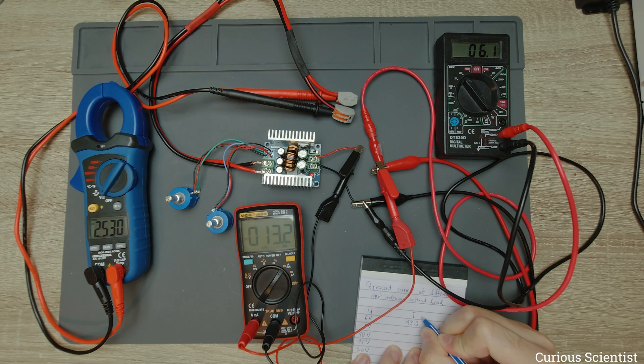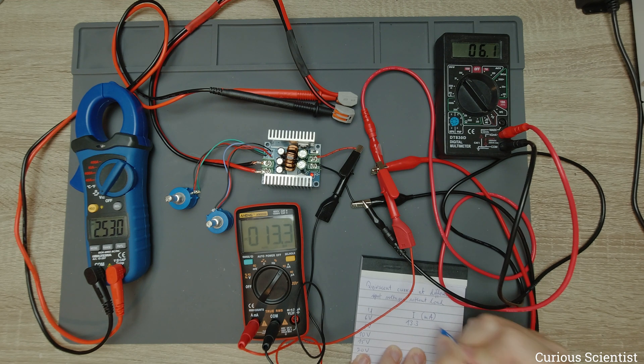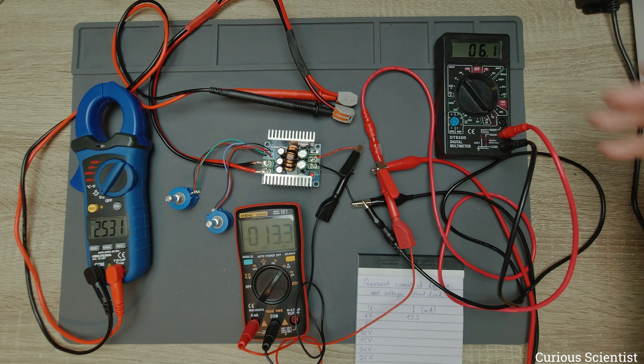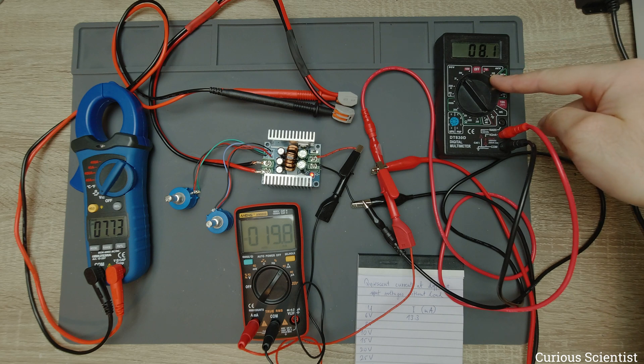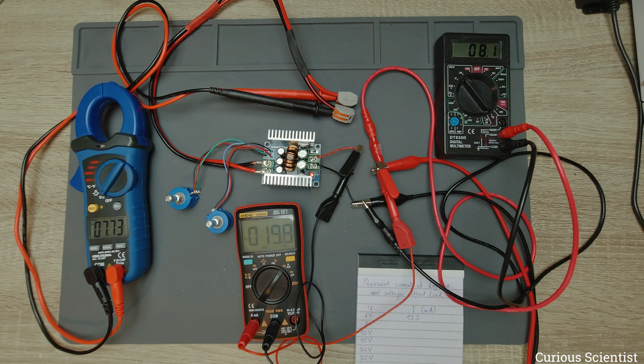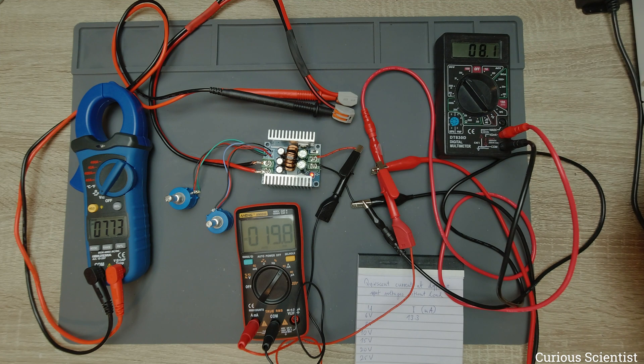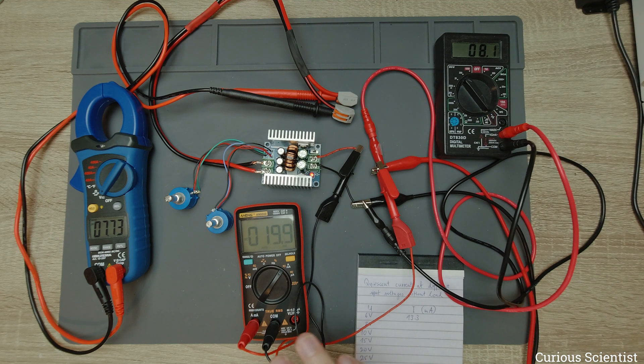Then we carry on, so I increase the voltage by 2 volts. We go to 8 volts, so as you can see here we have 8 volts input voltage. This shows 8.1, but the power supply shows 8, so I rely on that.